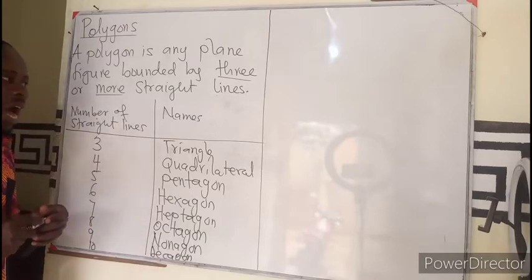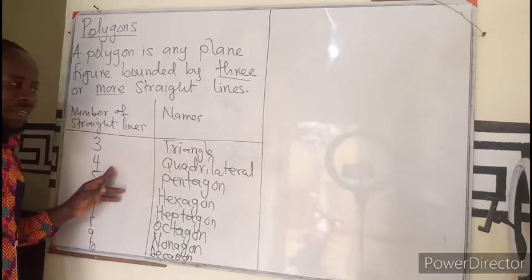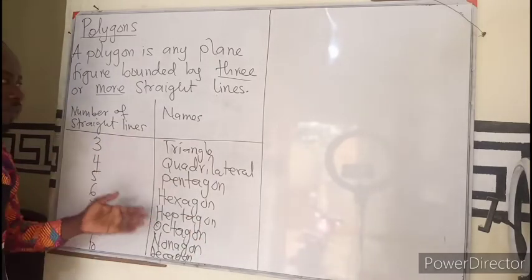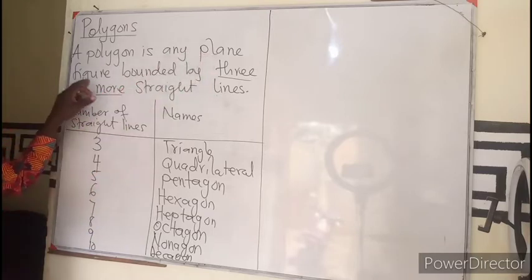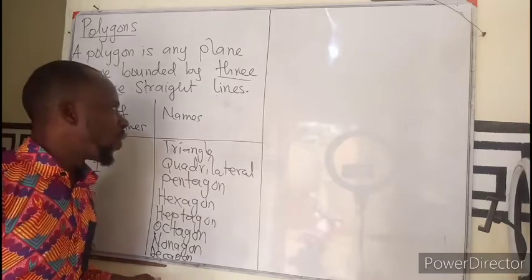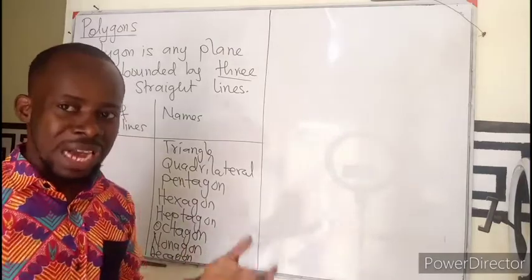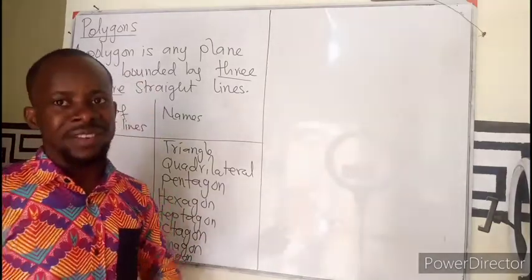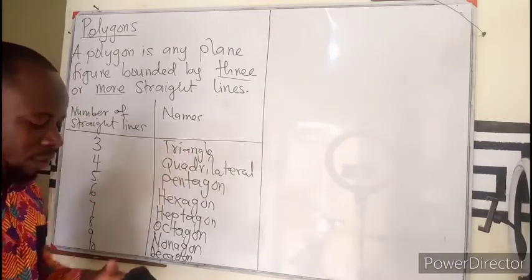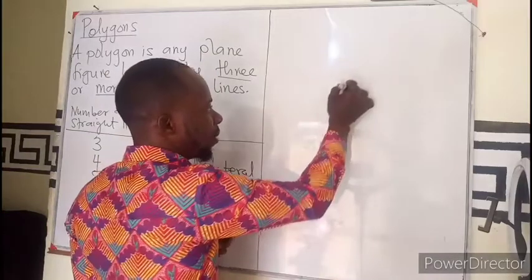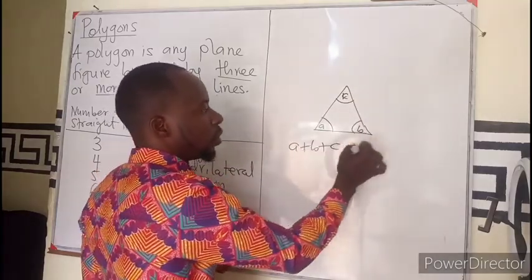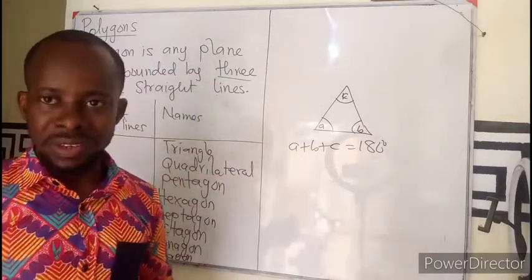So the number of sides determines the name of the polygon. Now we want to find the sum of angles present in a given polygon. In our previous lesson we said that the angles present in a triangle, if we add all the angles, it will give us 180 degrees.